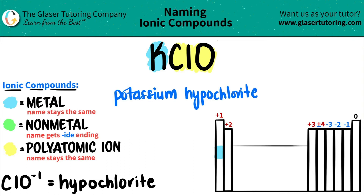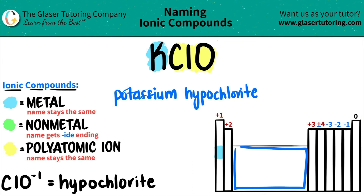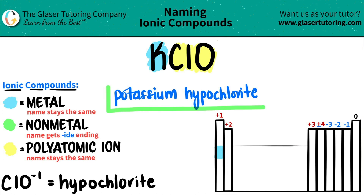Since it's ionic, just do a double check: do you need a Roman numeral in the middle? You only need a Roman numeral for elements that are transition metals. But since potassium is not in that block — that's where your transition metals are — you don't need one. So you're done. KClO is just potassium hypochlorite.